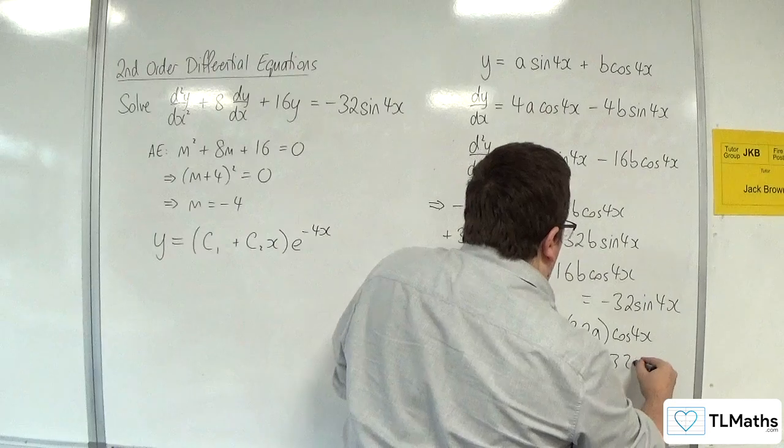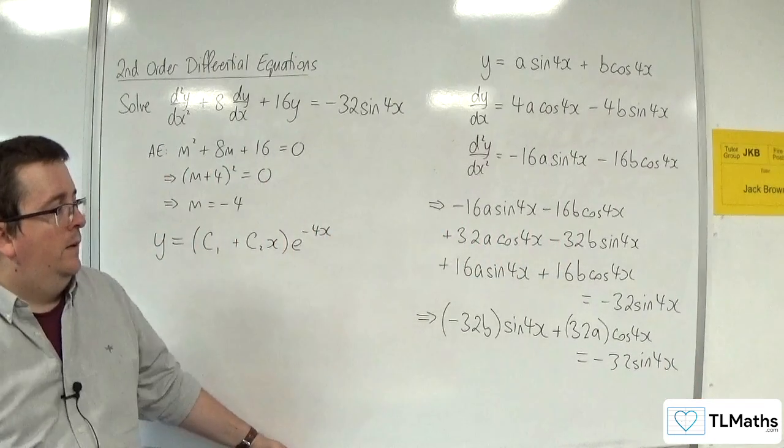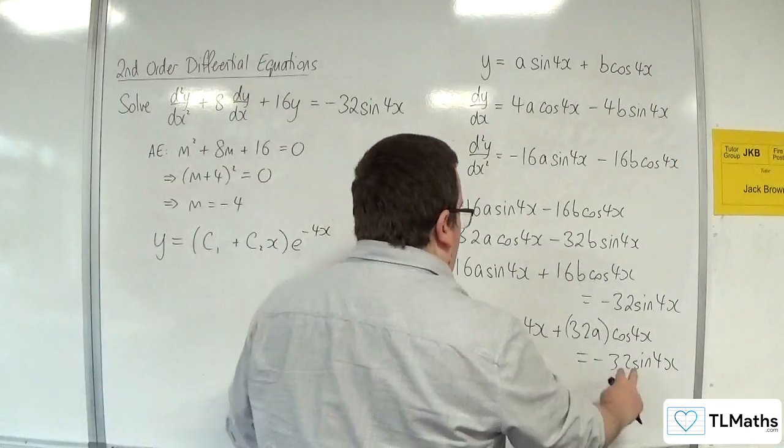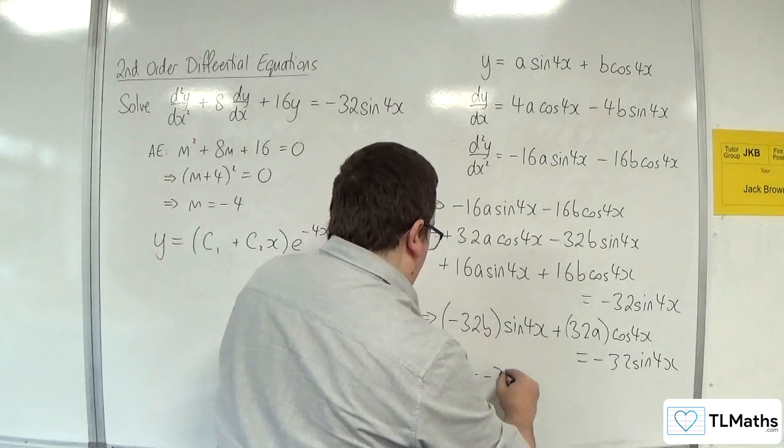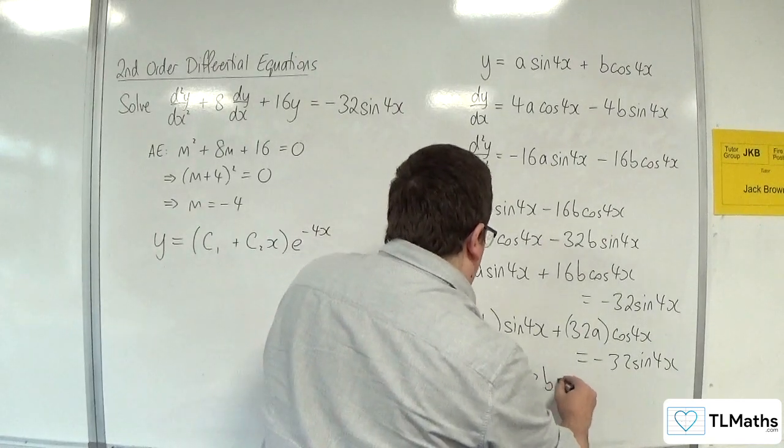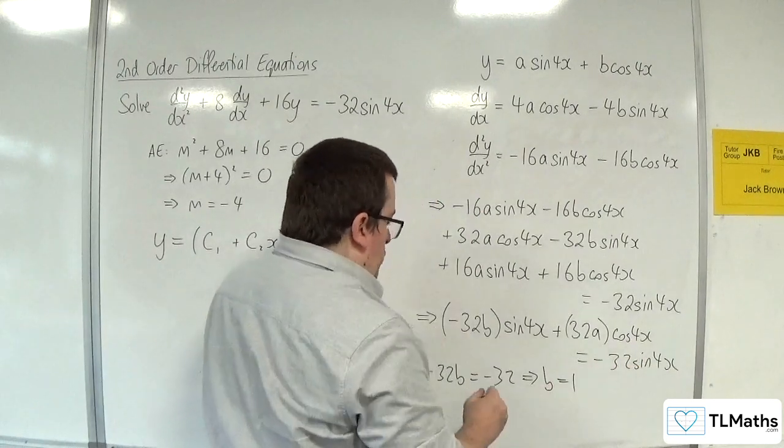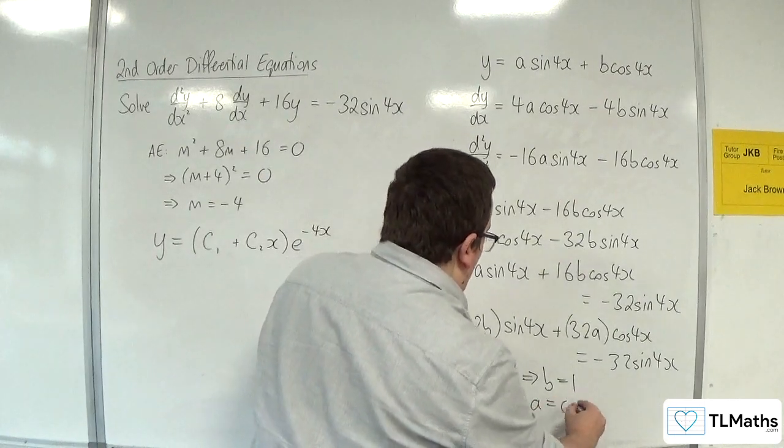And that's got to be equal to the -32 sin(4x). Now we compare coefficients. The -32b has got to be equal to the -32. So that implies that b has got to be 1. And we've got no cos(4x)'s on the right-hand side. So 32a has got to be equal to 0. So that means that a is 0.